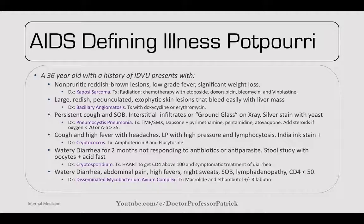For cryptosporidium, treatment would be highly active antiretroviral therapy to get the CD4 count above 100 and symptomatic treatment of the diarrhea. If somebody has watery diarrhea, abdominal pain, high fevers, night sweats, shortness of breath, and lymphadenopathy, with a CD4 count less than 50, this can be MAC — disseminated Mycobacterium avium complex. Treat with macrolide plus ethambutol, with or without rifabutin.